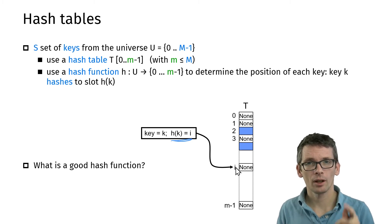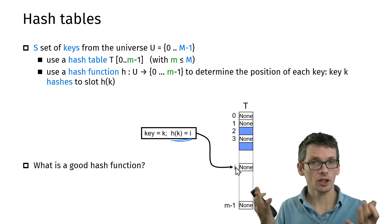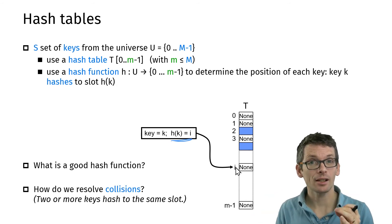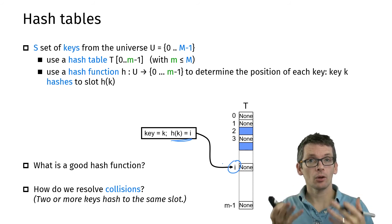We will have to address two questions. First, what is a good hash function? We saw the example of taking the last seven digits, but is that actually a good idea? Second, we have to think about how to resolve collisions. What happens if there's another element that wants to be stored at position i? How do I resolve that?